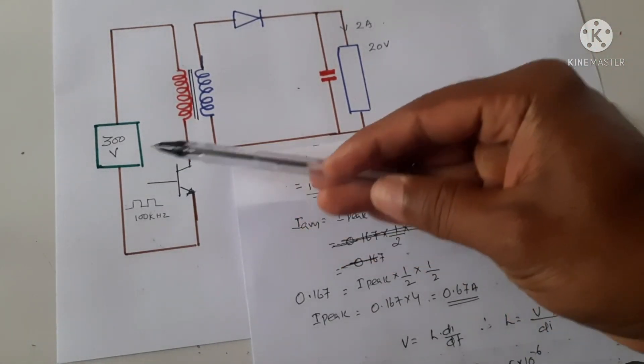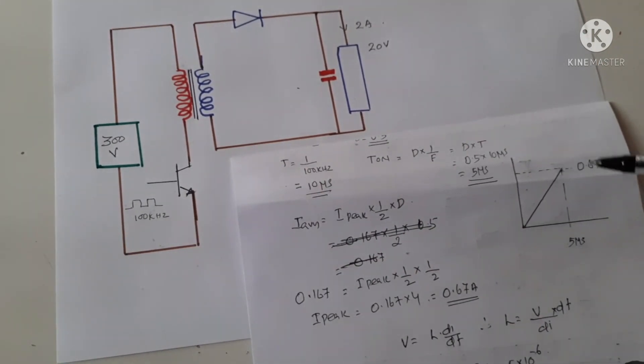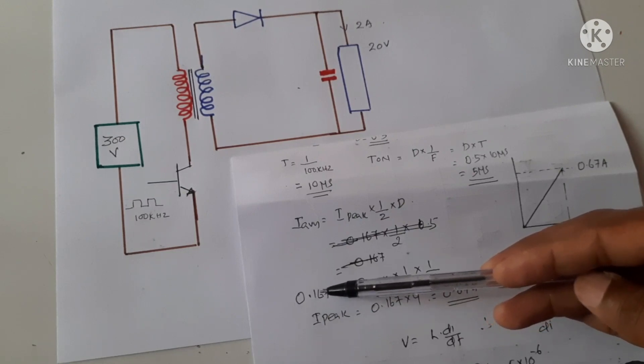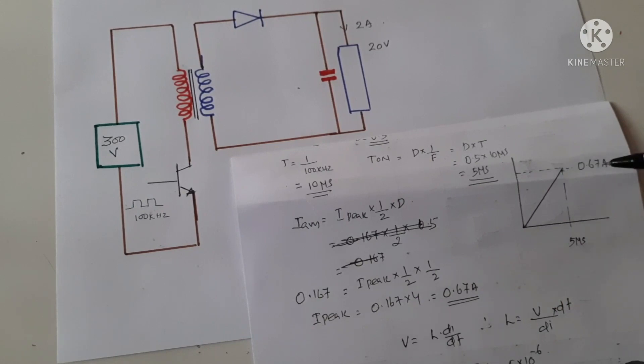When this transistor is on, the current through the inductor is increasing linearly like this, and the average value we have already calculated as 0.167 amperes. So if we want to calculate the peak value of the current,